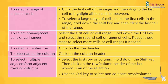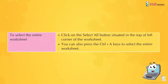Repeat these steps to select more cells or ranges if needed. To select an entire row, click on the row header. To select an entire column, click on the column header. To select multiple adjacent or non-adjacent rows or columns, select the first row or column, hold Shift and click the last row or column header. Use the Ctrl key to select non-adjacent rows or columns. To select the entire worksheet, click the Select All button in the top left corner, or press Ctrl+A.